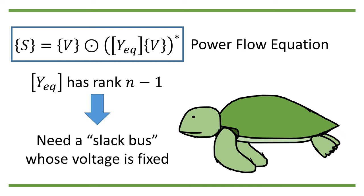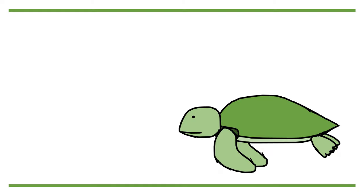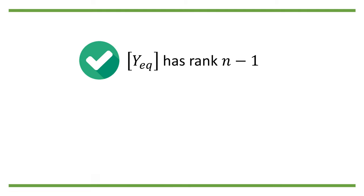However, as I rethink the problem for a while, I realized that this is not entirely true. Since y eq is the Laplacian matrix in graph theory and the power network is well connected, it surely has rank n minus 1. But that does not necessarily mean we need a slack bus.